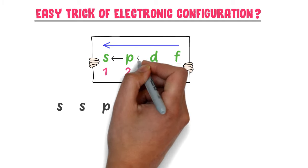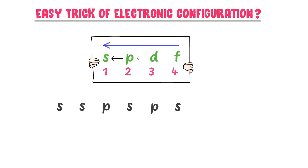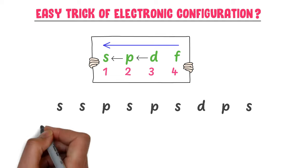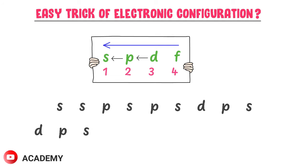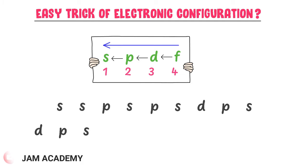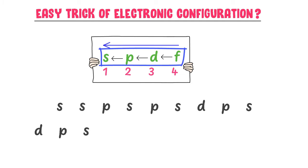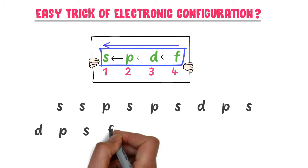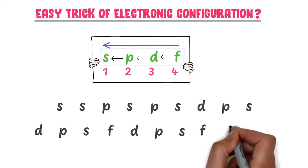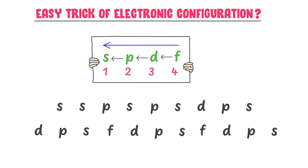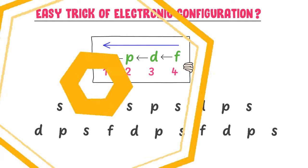Thirdly, I go from D to P and then to S. I take D, P, S and write them two times: D, P, S and D, P, S. Fourthly, I go from F to D, P, S. I take them and write them two times: F, D, P, S and F, D, P, S.